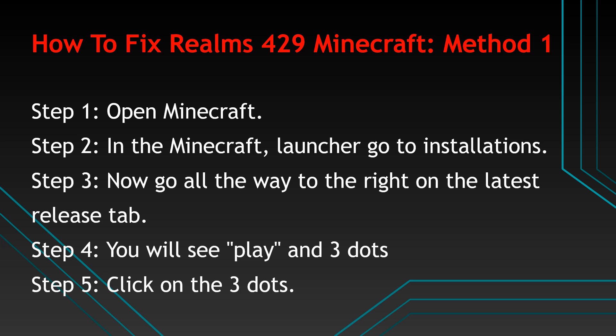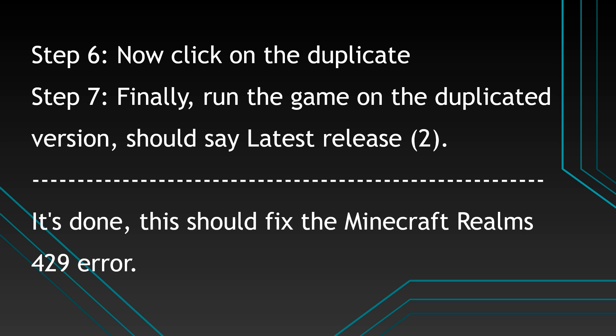How to fix Realms 429 Minecraft, Method 1. Step 1: open Minecraft. Step 2: in the Minecraft launcher, go to Installations. Step 3: now go all the way to the right on the latest release tab. Step 4: you will see Play and three dots. Step 5: click on the three dots. Step 6: now click on Duplicate.